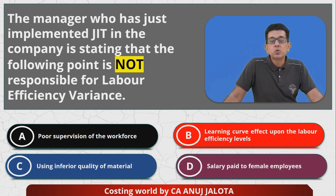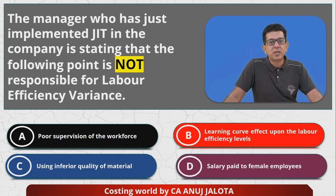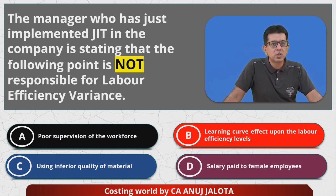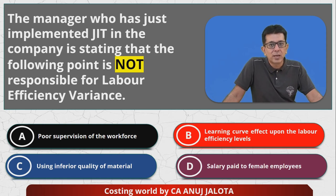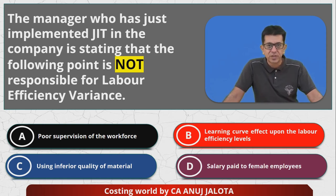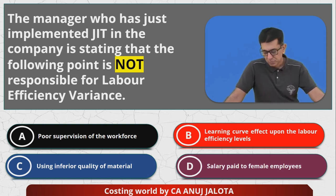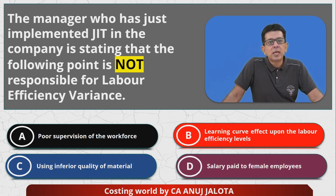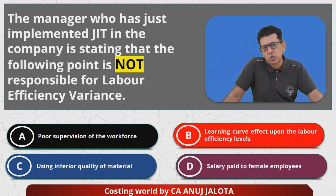Option C — using inferior quality of materials: if you give workers cheaper materials, they will work inefficiently or take more time doing production from bad material. That's very obvious. So options A, B, and C can all be reasons for labor efficiency variance.